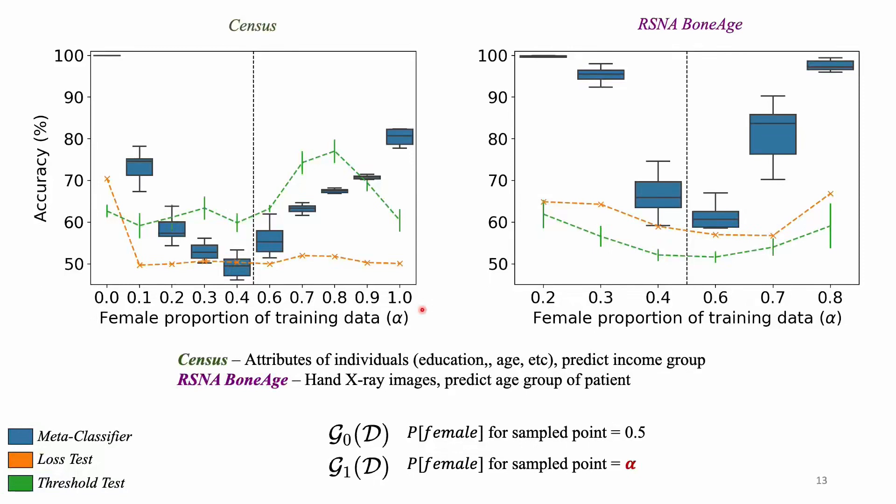What we see is the meta classifier which is the white box attack performs better than the black box attacks, understandably. And the second and more interesting point here is that the inference seems to be different for different data sets, and there's quite some variation as we'll see in the future slides.